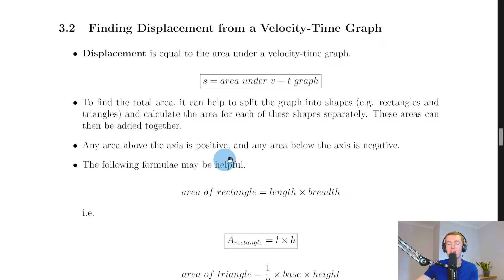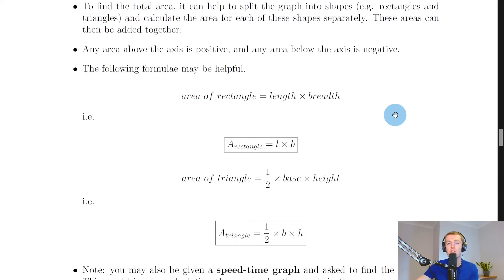Any area above the axis is positive and any area below the axis is negative and by axis here we mean the x-axis. The two shapes that you're commonly going to see in these kind of questions are rectangles and triangles because those are shapes that we can easily calculate the area of.